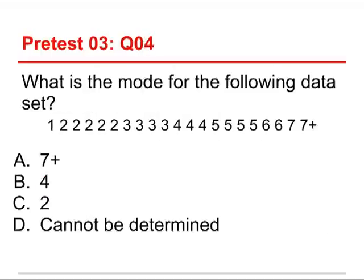Question number four: what is the mode for the following data set? We've got 21 numbers, and the choices are seven-plus, four, two, or cannot be determined. The answer is two. We have five twos — that two appears five times, so its frequency is five, which is greater than anything else. The frequency for three is four, for four is three, for five is four, for six is two, for seven is one, and for seven-plus is one. So two is the most frequently occurring score — that is the mode.